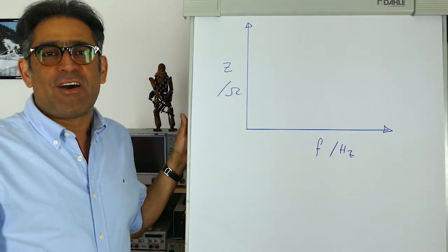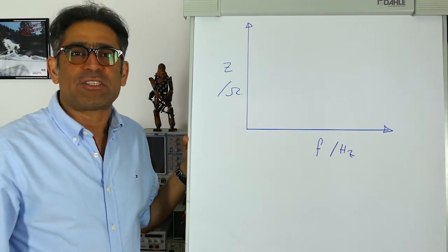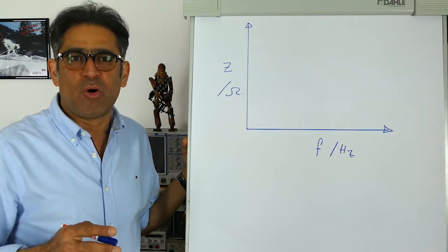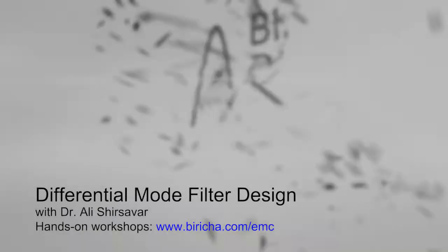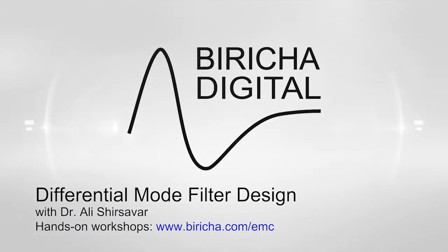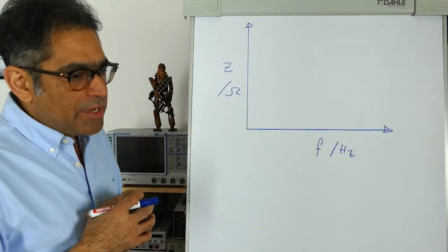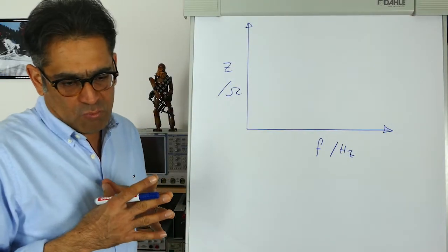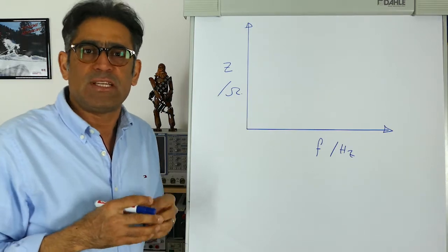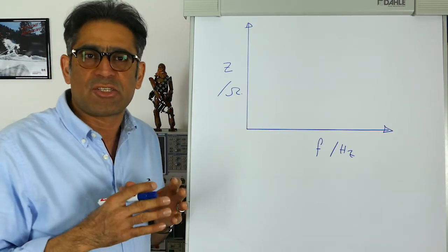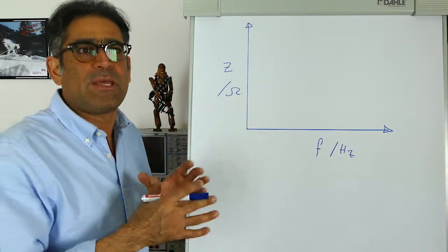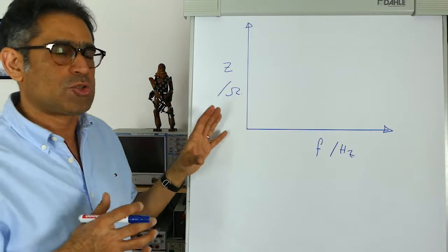Hi, my name is Ali Shersava and in this short video we're going to discuss how we go about designing a differential mode EMC filter. In order to design an EMC filter there are different strategies. The one that we're going to use is by using a fantastic tool which is called a reactance paper or an impedance paper. Before we show you the impedance paper, let us just look at the basics for one second.